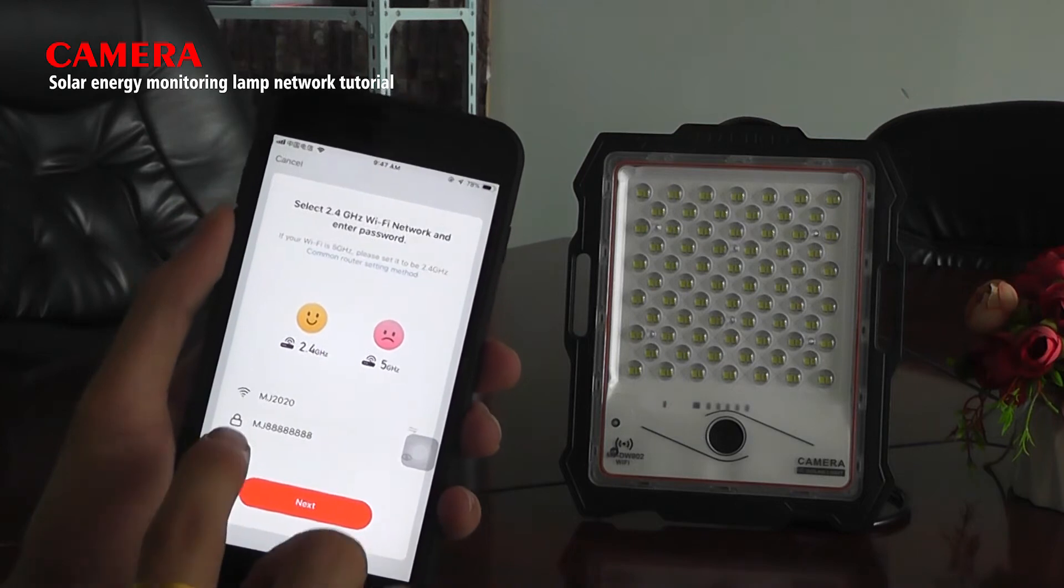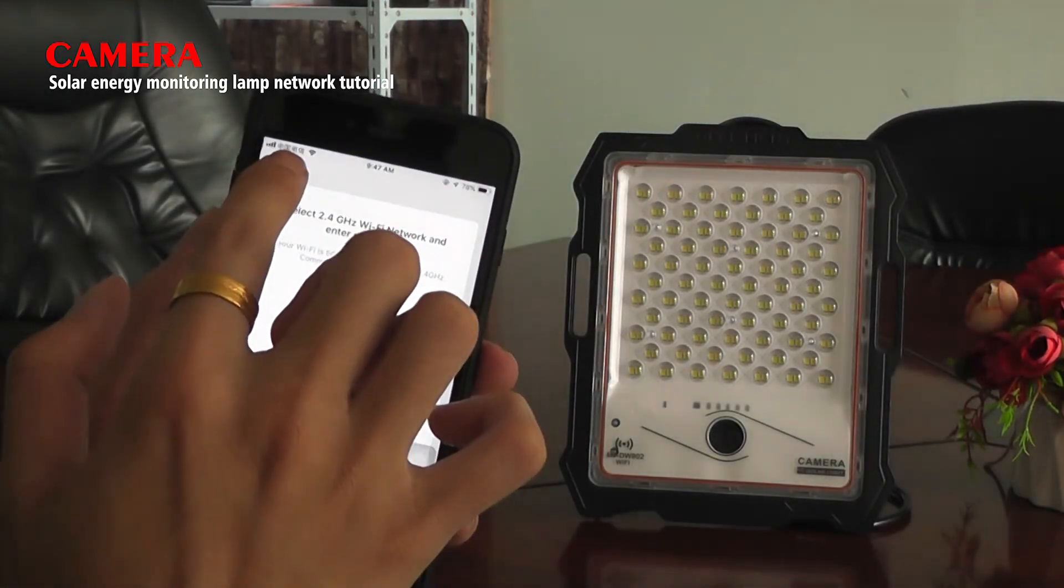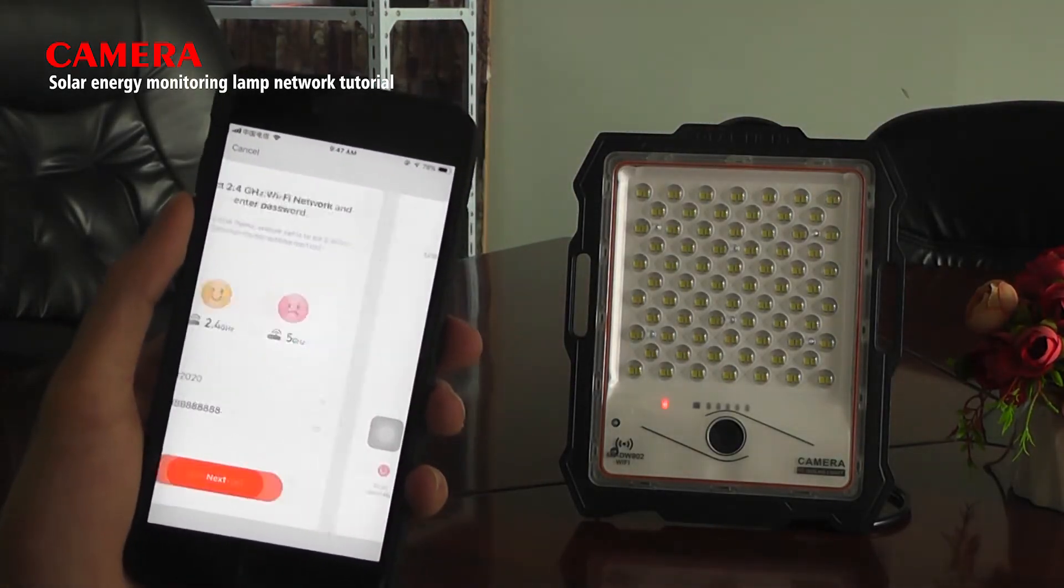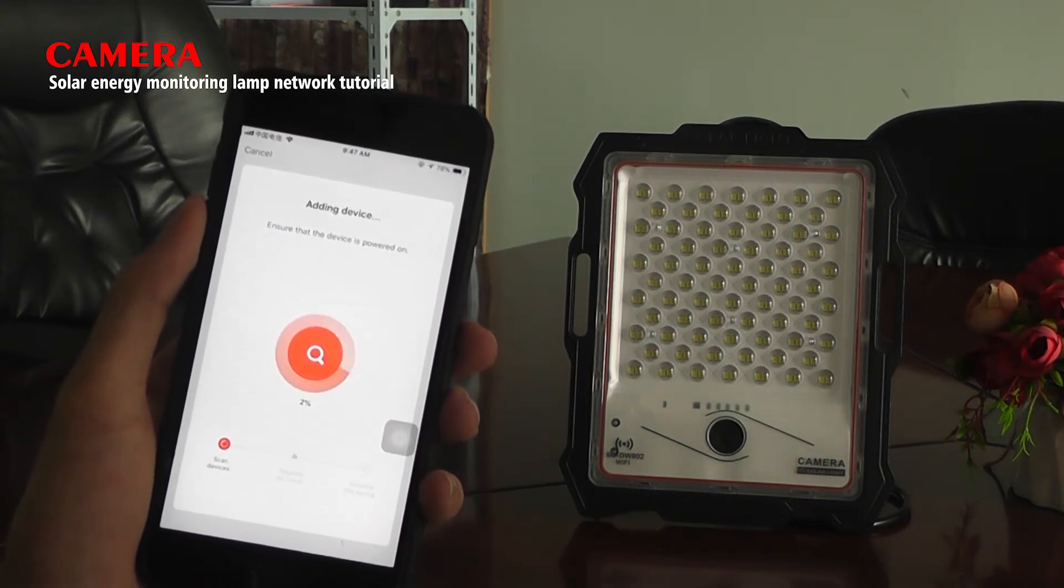Step 7, make sure the Wi-Fi link is on 2.4 GHZ frequency signal, then click next step.